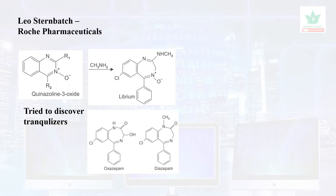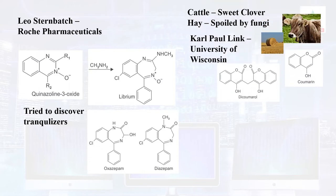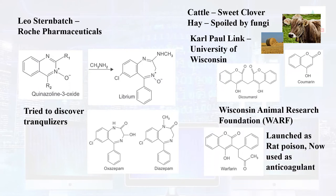The tranquilizers invented date back to the discovery at Roche Pharmaceuticals. Another serendipitous discovery: some cattle that ate spoiled sweet clover hay containing a fungus developed bleeding problems. Karl Paul Link at the University of Wisconsin discovered the fungus contained lead compounds such as coumarin and dicoumarol, which caused these bleeding disorders. The Wisconsin Alumni Research Foundation (WARF) launched the rat poison warfarin, which is now used as an anticoagulant.